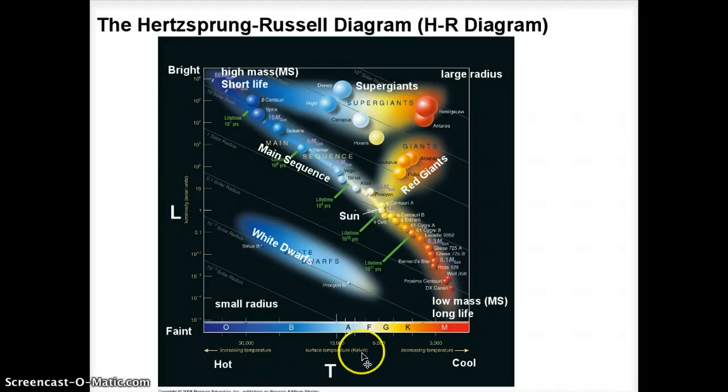On the x-axis, I told you that it's temperature, but it's also spectral type. You can see the spectral types on here: O, B, A, F, G, K, M. Oh be a fine girl, kiss me. You should remember that order. That's how Hertzsprung and Russell initially graphed it.